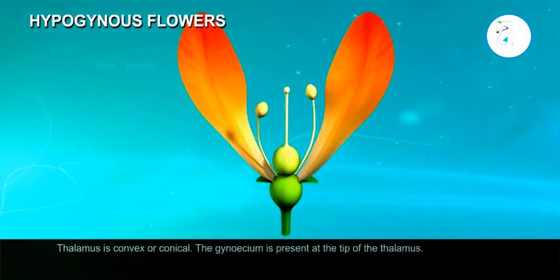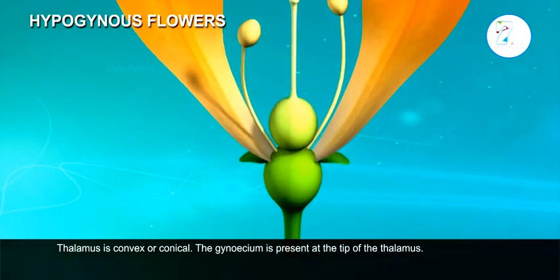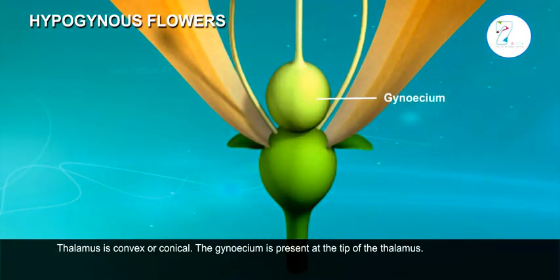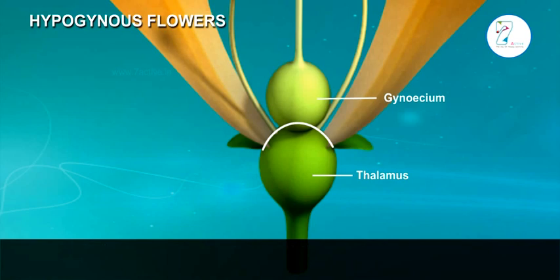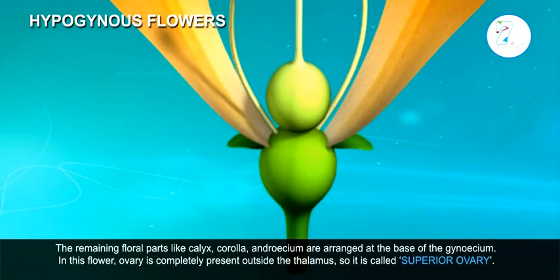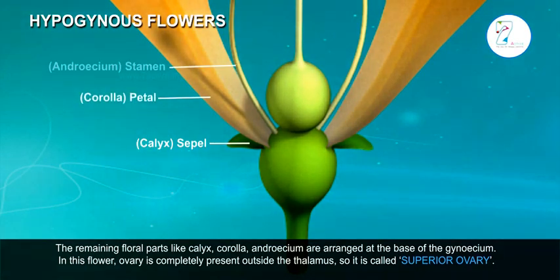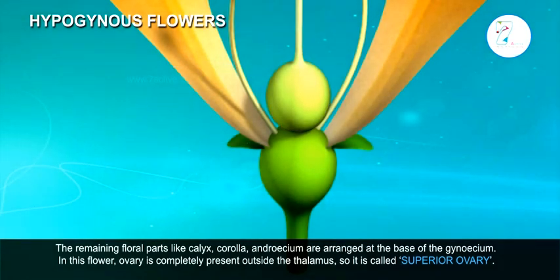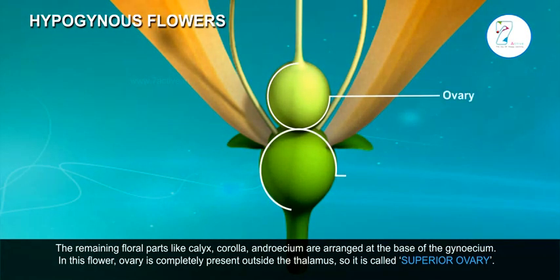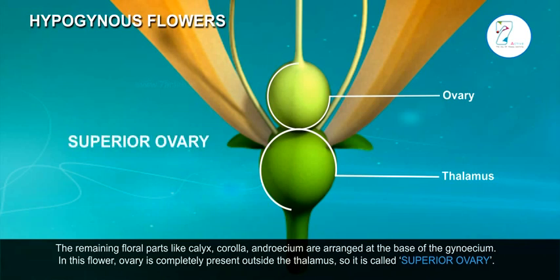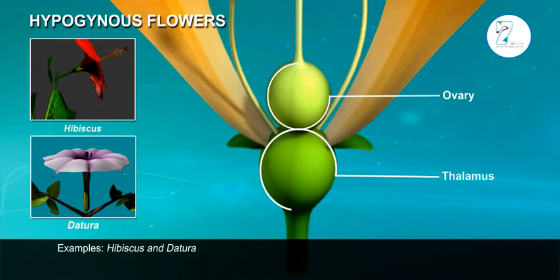1. Hypogynous flowers. The thalamus is convex or conical. The gynoecium is present at the tip of the thalamus. The remaining floral parts, like calyx, corolla, and androecium, are arranged at the base of the gynoecium. In this flower, the ovary is completely present outside the thalamus, so it is called a superior ovary. Examples: Hibiscus, Datura.